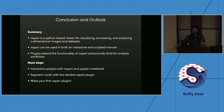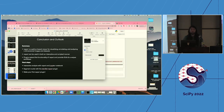In conclusion, Napari is a Python-based viewer for visualizing, annotating, and analyzing n-dimensional images, usable in both an interactive and scripted manner. Plugins extend the functionality and provide GUIs for analysis workflows. Today we'll be performing interactive analysis in a Jupyter notebook, using the Stardist plugin to segment nuclei, and you'll make your first Napari plugin. Any questions before we jump into the hands-on parts? Just out of curiosity, how many folks have used or heard of Napari before?